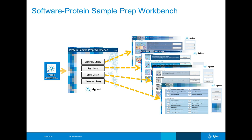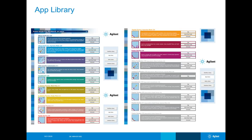Now I'm going to jump into our software, because I mentioned you don't have to be an automation engineer to use it. We have a little icon on the desktop of the computer that controls the AssayMap Bravo, which brings you to our Protein Sample Workbench. Within the workbench, you have four options: a workflow library, an application library, a utility library, or a literature library, each opening into different types of libraries.